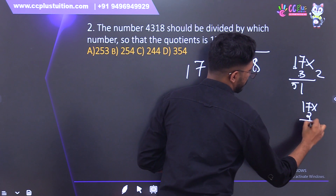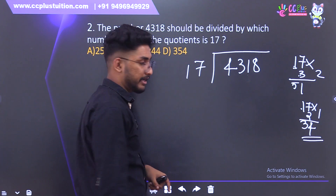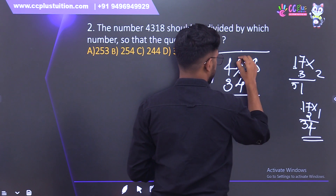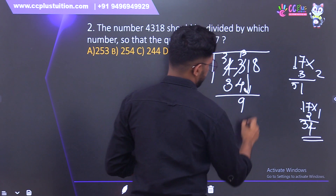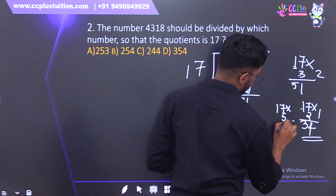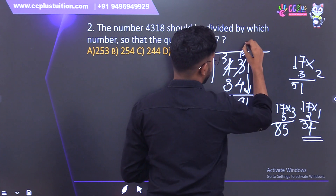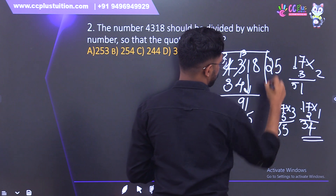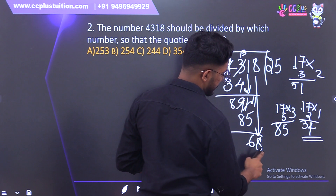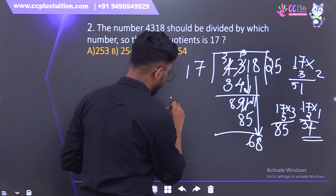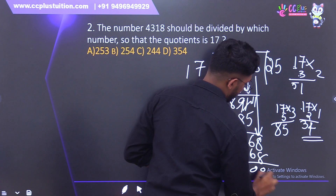Let's add: 17 into 2 is 34. 34 is equal to 34, giving 91. 91 is equal to 7. 17 into 5: 85 is close to 81. 17 into 4 is equal to 68. So 17 into 4 equals 68.